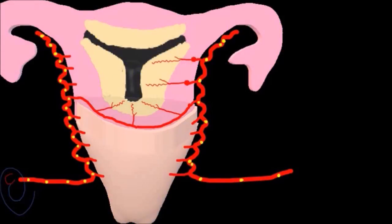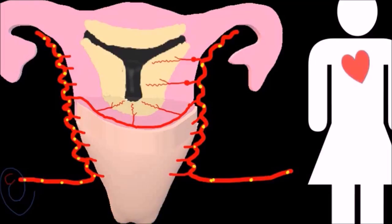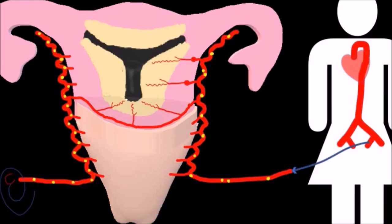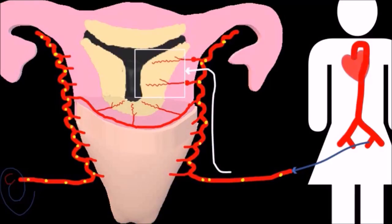Uterine artery Doppler measures the velocity of blood flow inside the uterine artery. During systole, the blood flow is very fast and depends on the woman's heart contractions. The flow pattern during diastole depends on the terminal vascular resistance, mainly the spiral artery.